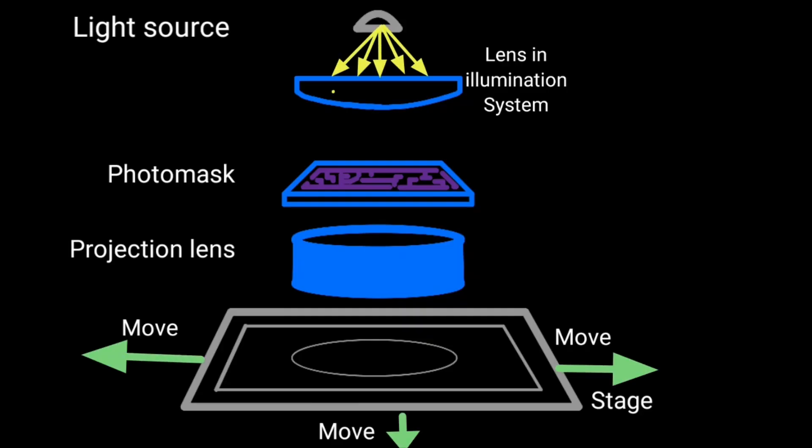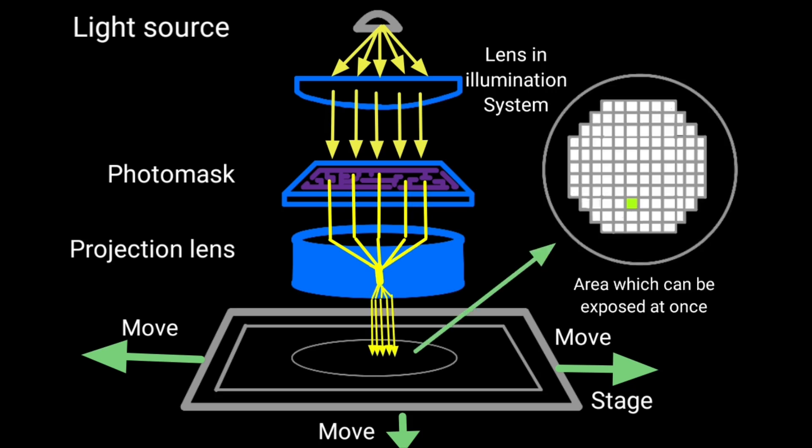In photolithography process, light from an illuminator is projected through a mask that contains the desired pattern. The UV light that passes through the mask is reduced by a factor of 4 by focusing length and projected onto photoresist coated wafer. This step exposes one chip on the wafer and the process is repeated for all chips on the wafer.